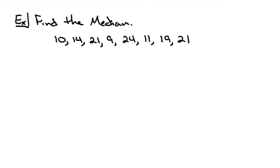As the second example here, we're going to find the median. The median is the middle number, but it's the middle number when the list is in order from least to greatest. So that's what we're going to do first. We're going to order from least to greatest.